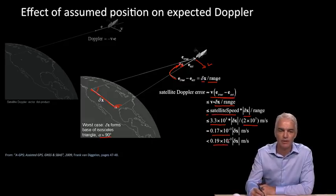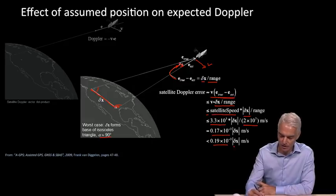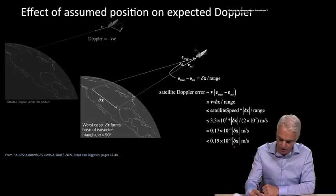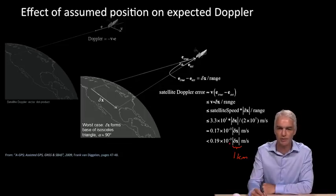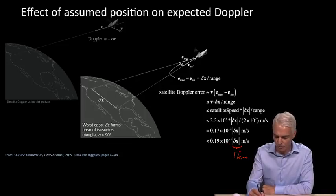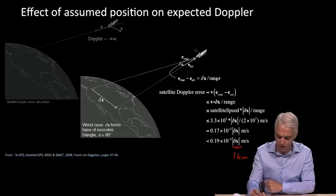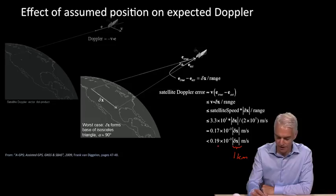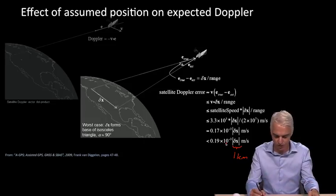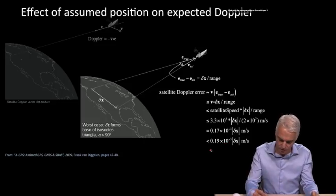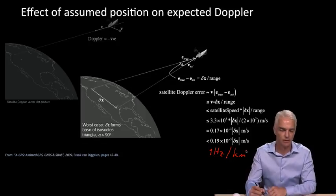Why do we do that? 19 centimeters is the wavelength of the satellite. If we analyze this, suppose delta x is 1 kilometer. Then 1 kilometer times 10 to the minus 3 is 1 meter. We're left with 0.19 meters per second. For each kilometer of delta x value, we get 1 wavelength per second, in other words, 1 hertz. We can rewrite this as 1 hertz per kilometer. That's the result we're looking for, the effect of the error in assumed position on the expected Doppler.